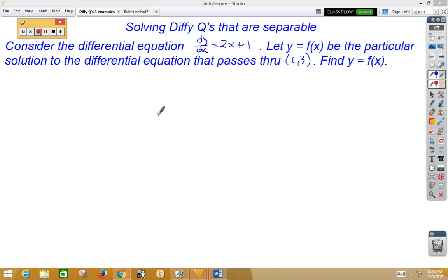Remember, that's the equation for the slope of a tangent line at any point on a curve. We want to let y equal f(x) be the particular solution to the differential equation that passes through the point (1, 3). We'd like to find y equals f(x).